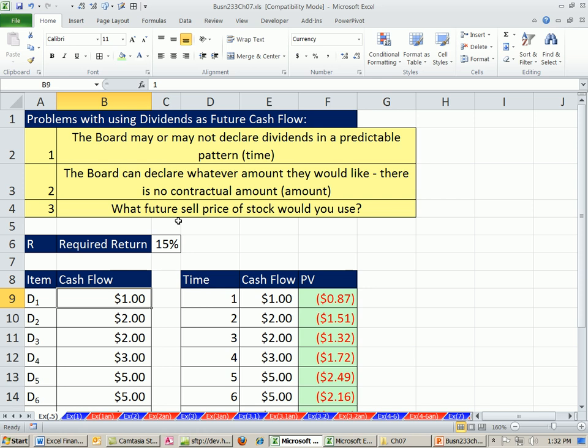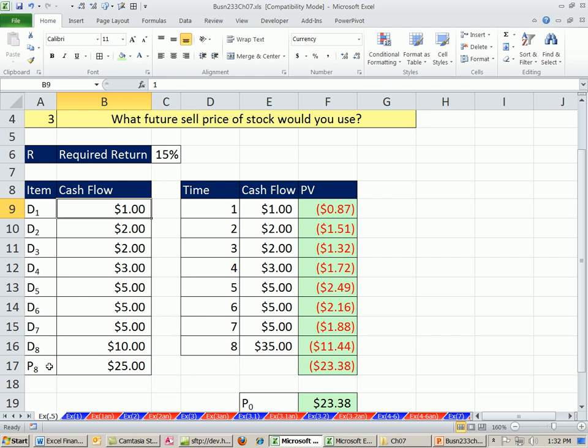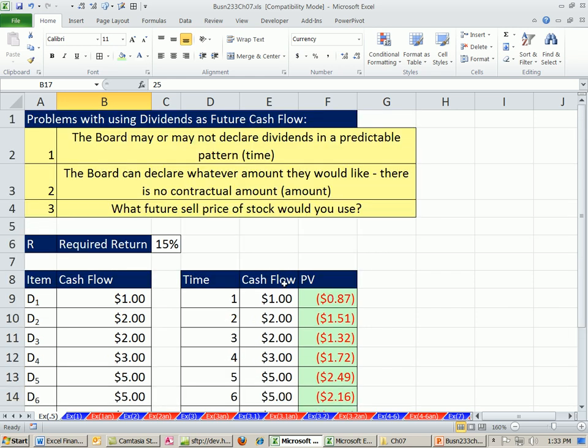And then finally, the third one is, what future price would you use? We just guess, basically. It says, OK, eight years from now, it's going to be selling for $25. Yeah, right, like we know that for sure. But this concept will be helpful for us. Let's go over to our PDFs, which also can be downloaded.